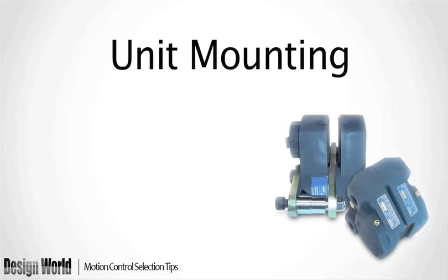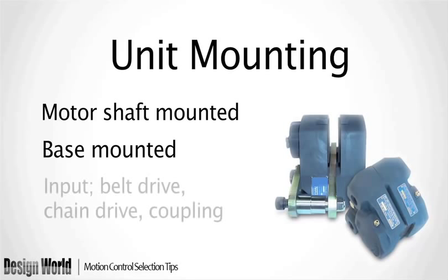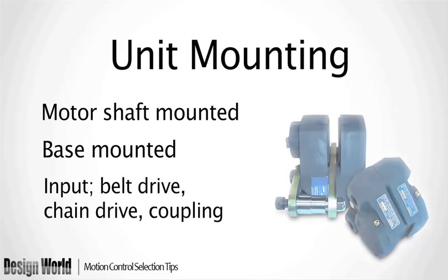The next choice is unit mounting. Both clutches and clutch brakes can mount to the motor shaft or be base mounted and have input via a belt drive, chain drive, or coupling.